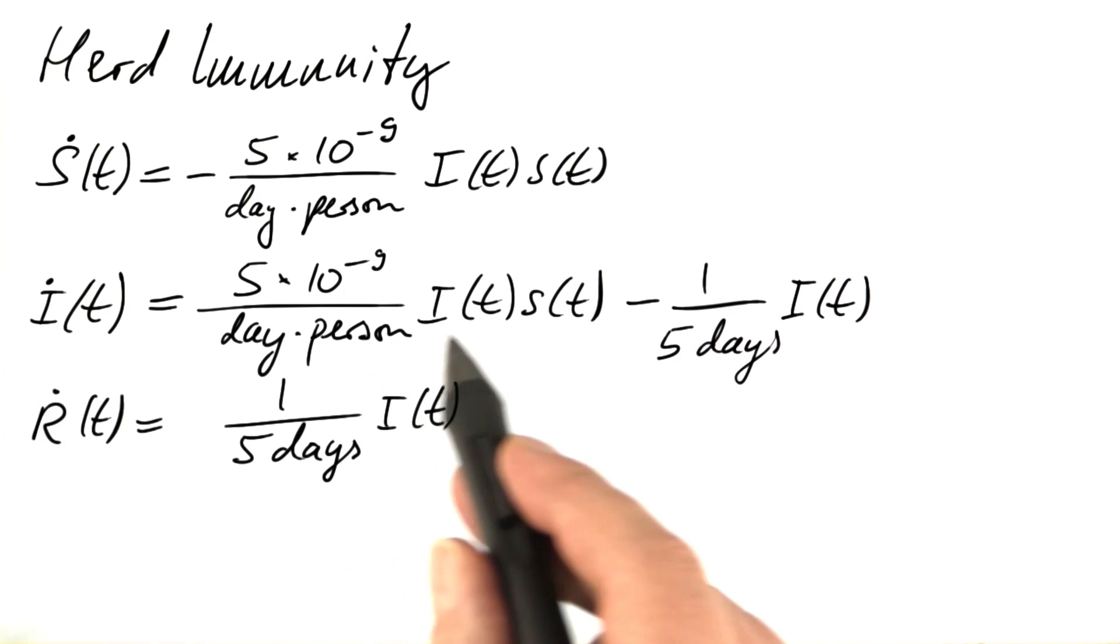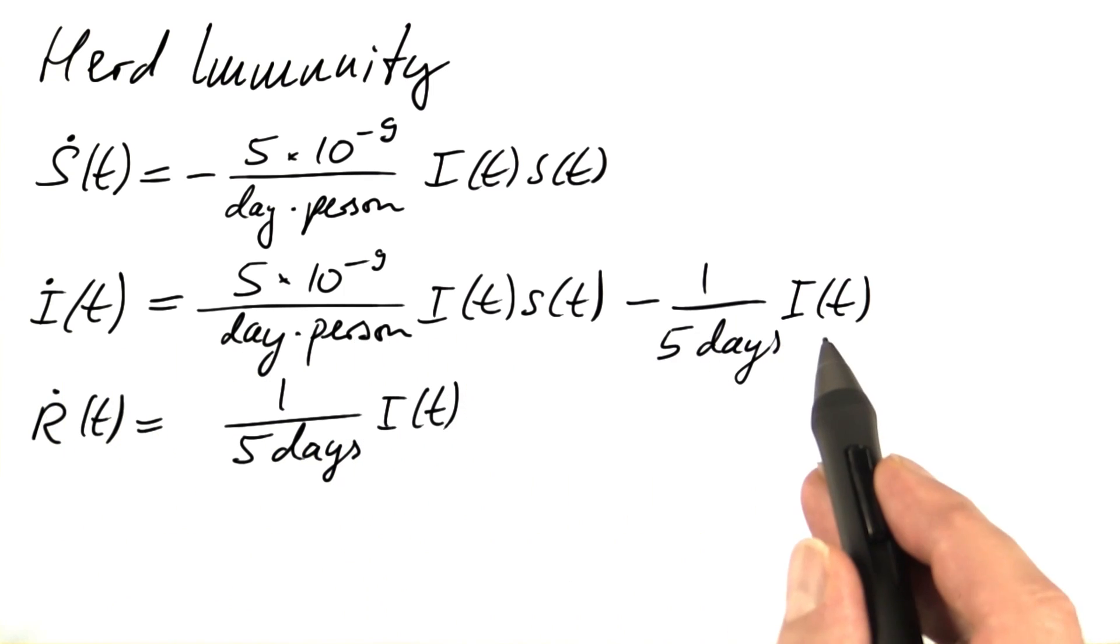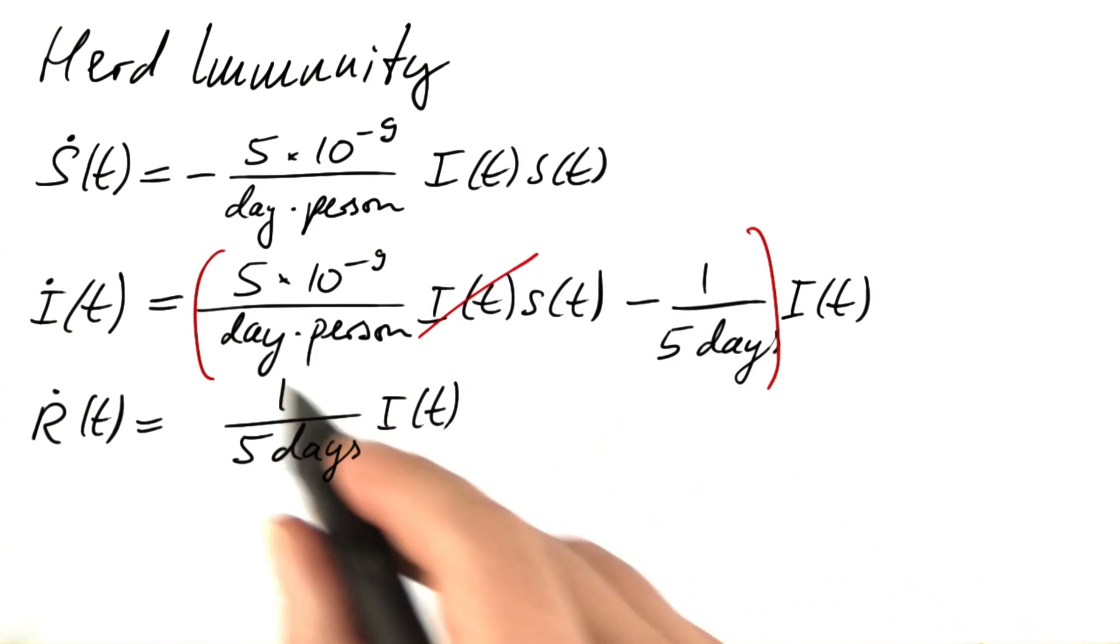On the right-hand side of the I equation, the factor I appears in every term. If we factor it out, this is what happens.